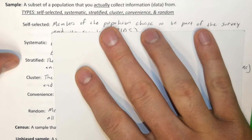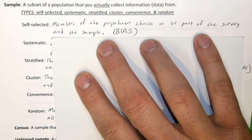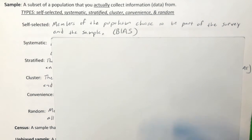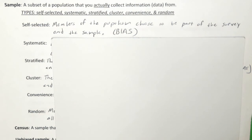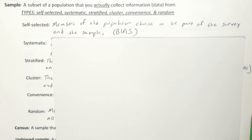One of the most popular ways to collect a sample of data is called self-selected. Members of a population choose to be part of the survey and the sample. They may be handed a survey and choose to fill it out or not. This happens all the time — on Amazon, every time you buy a product, you can choose to fill out the survey or not.